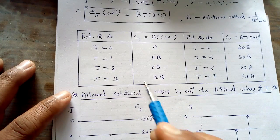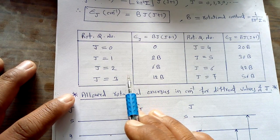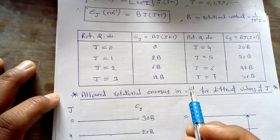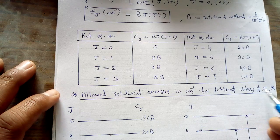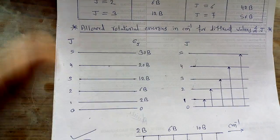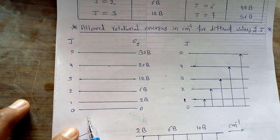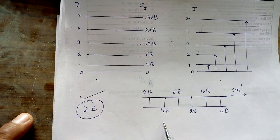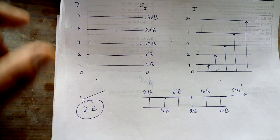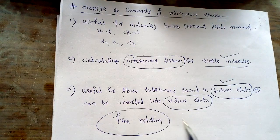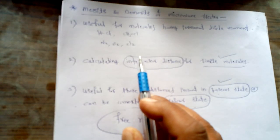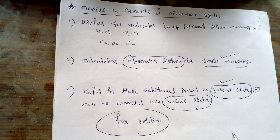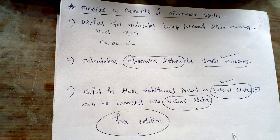These are the different allowed rotational energies in per centimeter for different values of J. We discussed the different allowed rotational energy levels, their allowed transitions, and the spectra. Finally, we completed the merits and demerits of microwave spectra. With this we conclude — the remaining points will be taken up in the next lecture. Thank you.